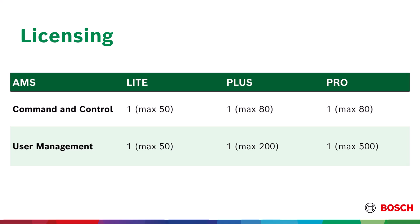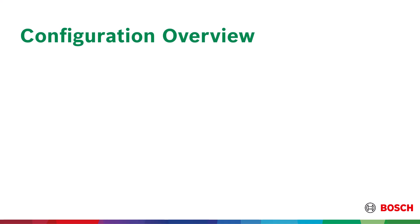For command and control, the maximum number of panels is 50 for Lite and 80 for Plus and Pro. For user management, the maximum number is 50 for Lite, 200 for Plus, and 500 for Pro.